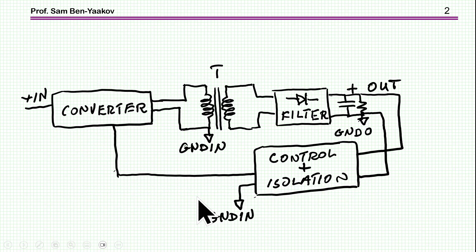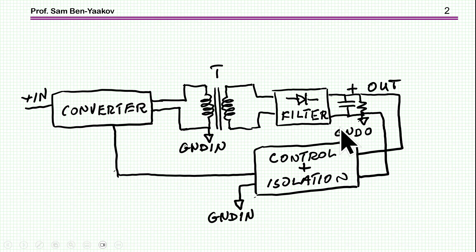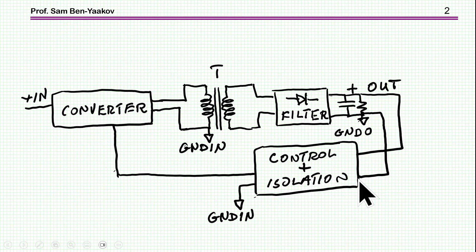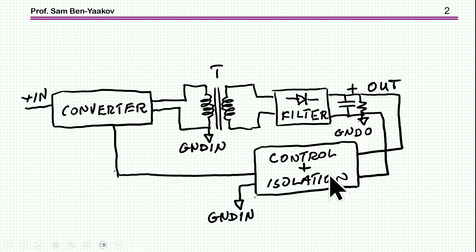Many systems need an isolated converter. In this case, we usually use a transformer. We have a converter, a transformer for isolation, two grounds — the input ground and the output ground — and then a rectifier at the output section. To control the output voltage, we need to send a signal from the output back into the input, requiring isolation — an opto-isolator or similar, which is costly and cumbersome. In this presentation, I'm going to show how to control both the voltage and current of the output without this isolated feedback.